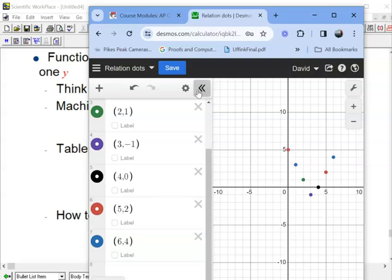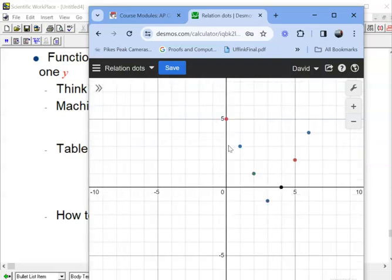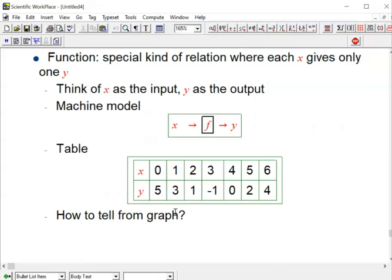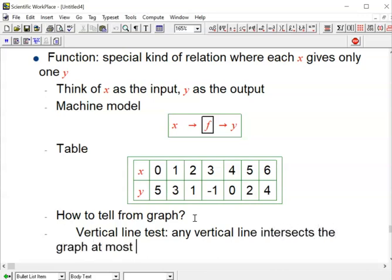What does it look like graphically to have this property that every X value only has one Y value? It says pick an X value. Look at the vertical line through that X value. You should only have one Y value. That means you should only have one point on the graph on each vertical line. So that's called the vertical line test. And it just means that any vertical line intersects the graph at most once.